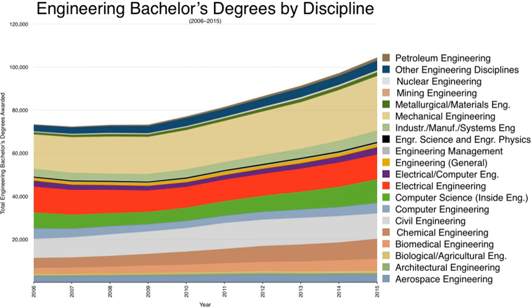Most bachelor's degree engineering programs in the US are four years long, requiring about two years of core courses followed by two years of specialized courses. Core courses typically include mathematics (single and multi-variable calculus, differential equations), general chemistry, English composition, general and modern physics, computer science, and introductory engineering. Required common engineering courses also include engineering drawing and drafting, materials engineering, statics and dynamics, strength of materials, electrical engineering, thermodynamics, fluid mechanics, and systems or industrial engineering.